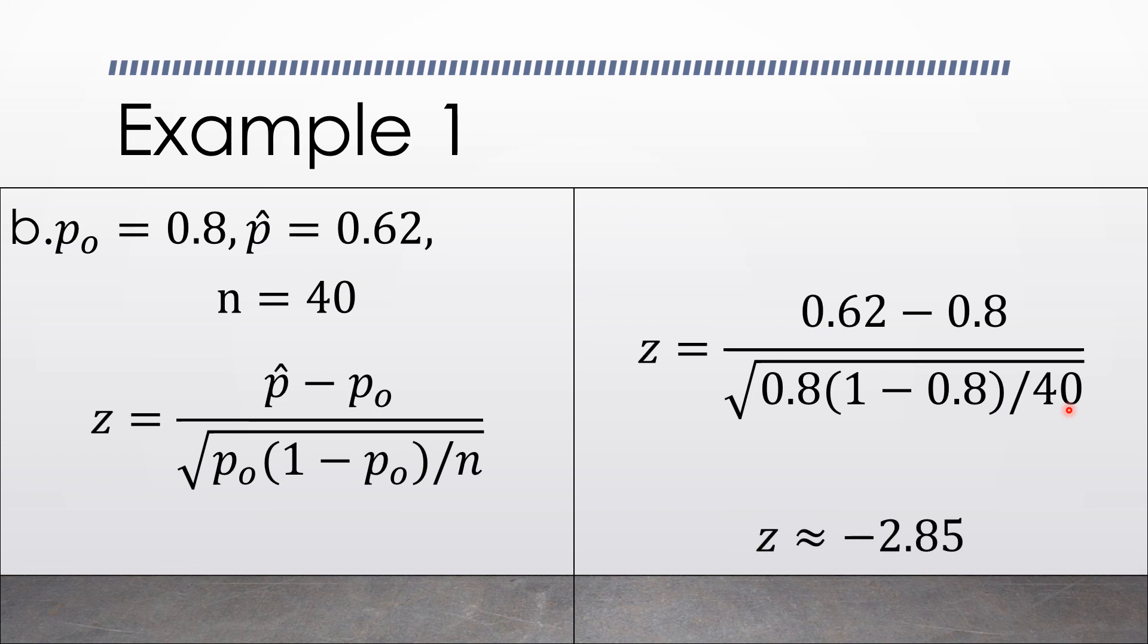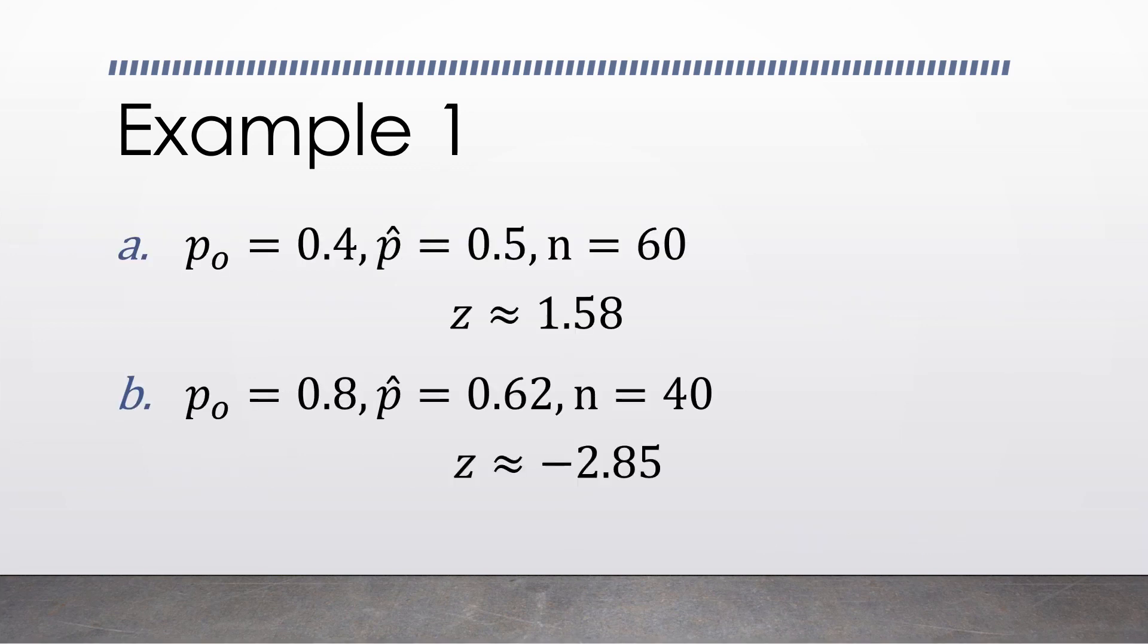we can arrive at the answer: z is approximately equal to negative 2.85. This one is also rounded off to two decimal places. So, these are the answers for the value of z in our first example.